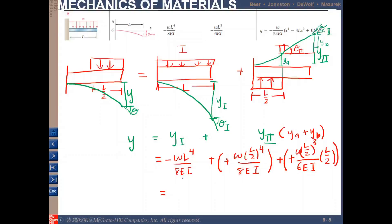Adding and expanding all the terms, the final total deflection at point B is y = −41wL⁴ / 384EI. The negative sign confirms that the deflection is directed downward.